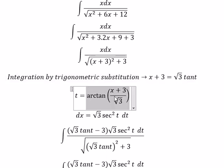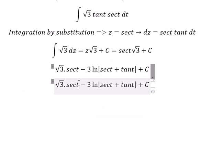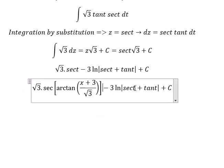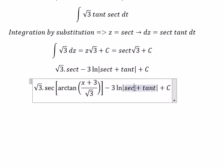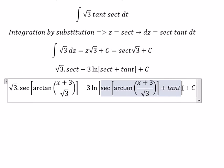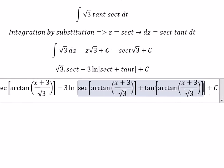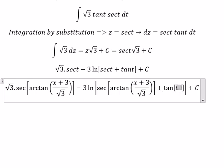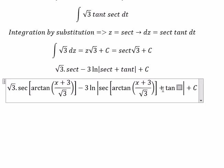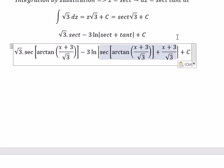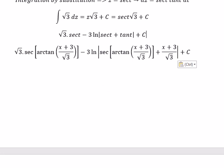So we substitute this back in here. We now have arctan of (s plus 3) over the square root of 3, and that is the final answer.